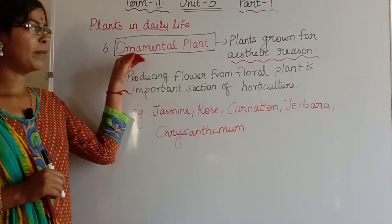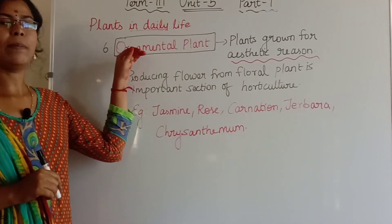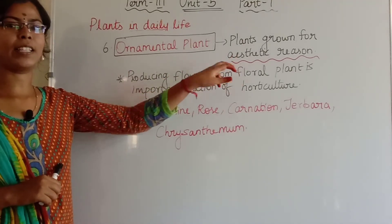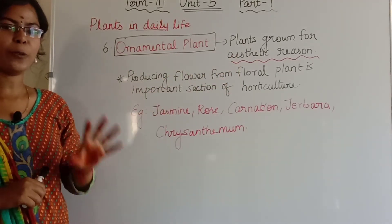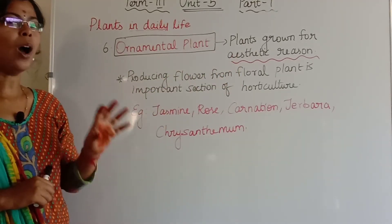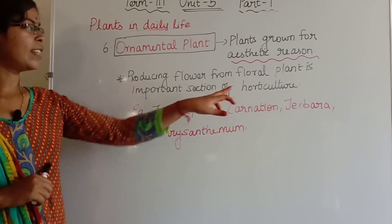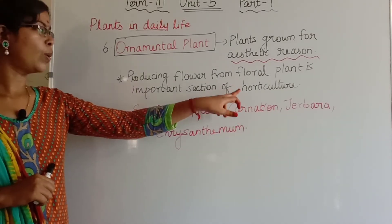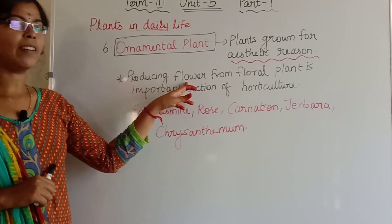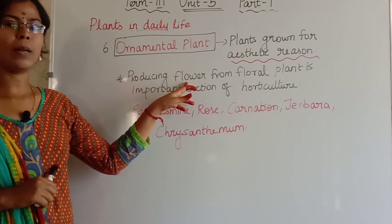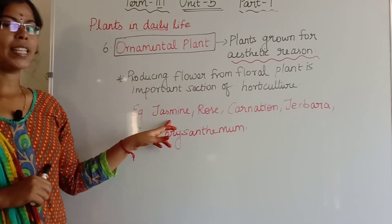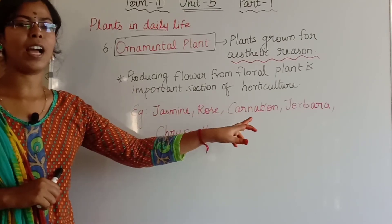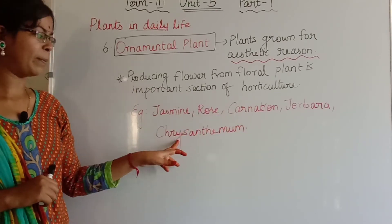The last category is ornamental plants, grown for aesthetic reasons. This is part of horticulture — that is gardening. We produce flowers from floral plants. For example: jasmine, rose, carnation, gerbera and chrysanthemum.